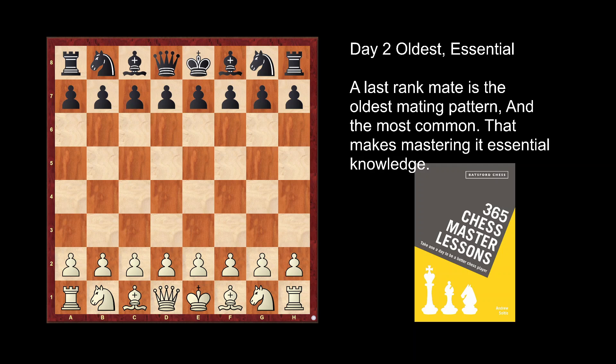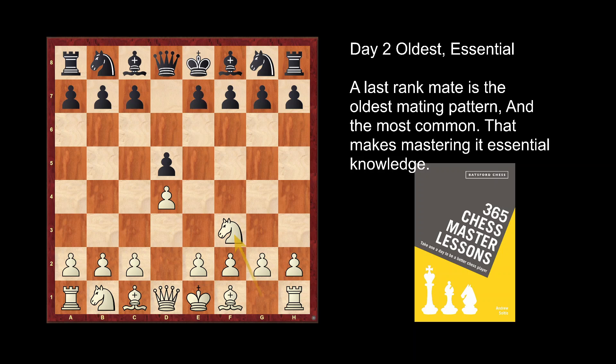The game starts with d4, d5 — Queen's pawn opening. White does a knight jump instead of the Queen's Gambit. The idea is to protect the pawn and try to attack the e5 square, discouraging e5. Black plays e6 — you cannot go e5 so let's go e6.